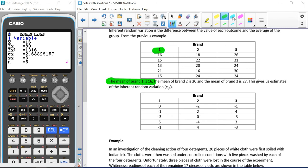So for list 1, the mean is 16 and similarly for brand 2, it's 20 and for brand 3, the mean is 27.